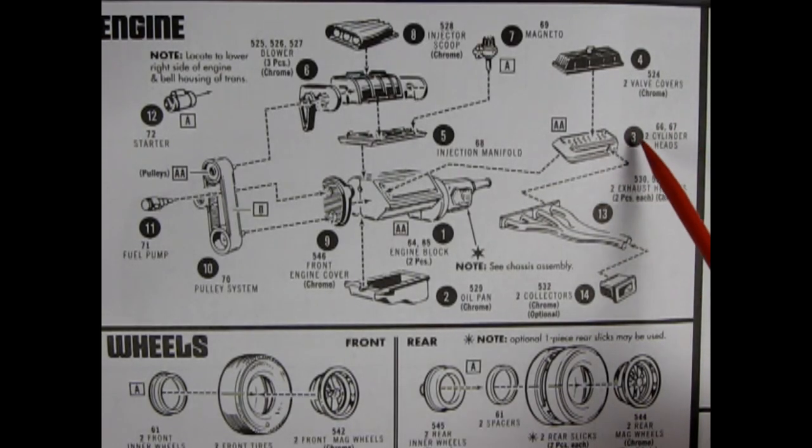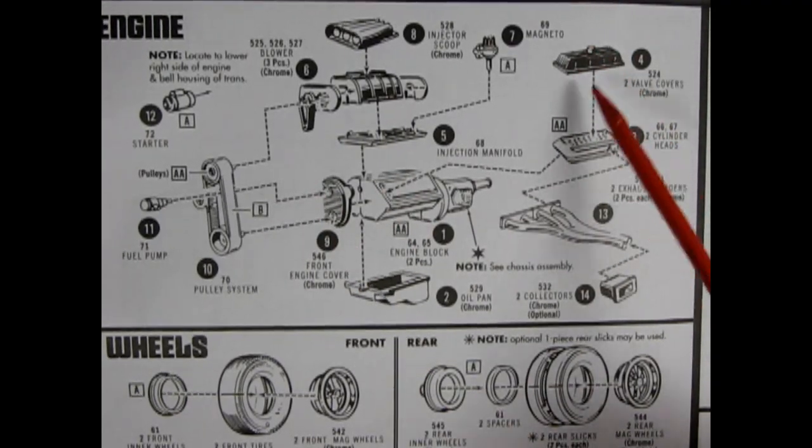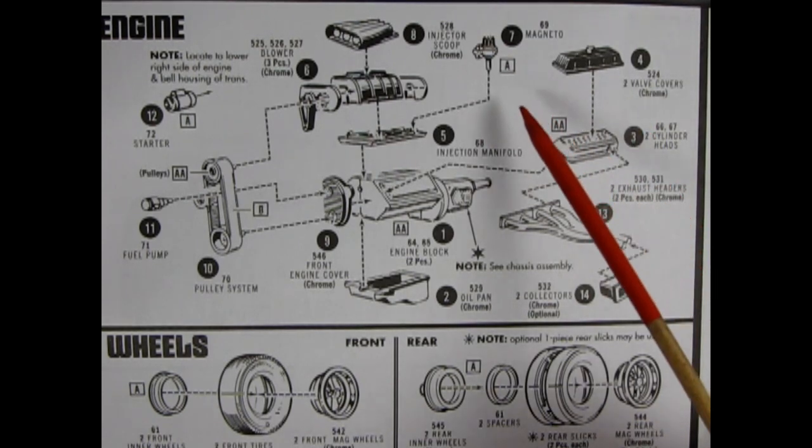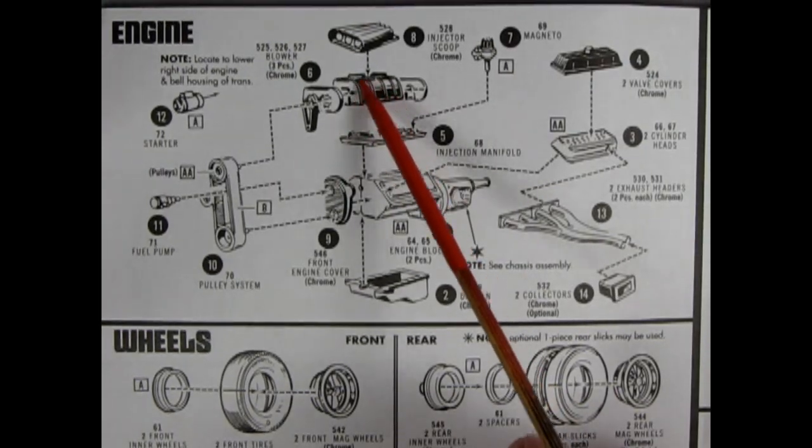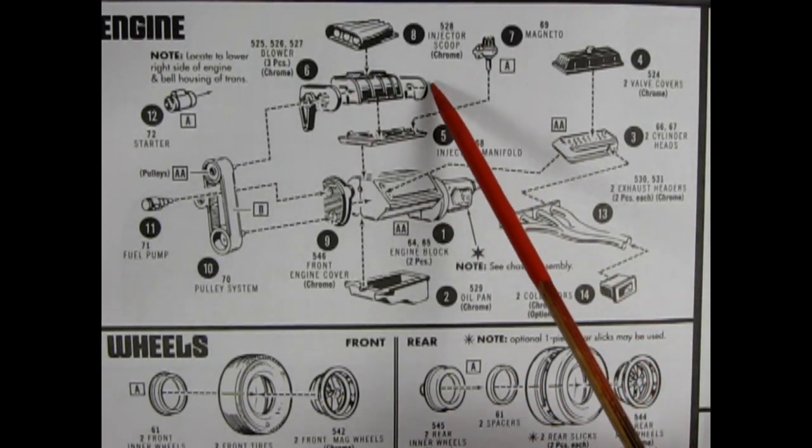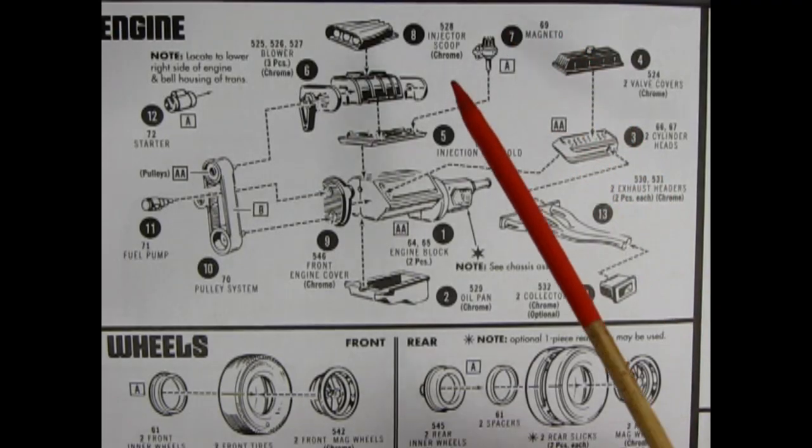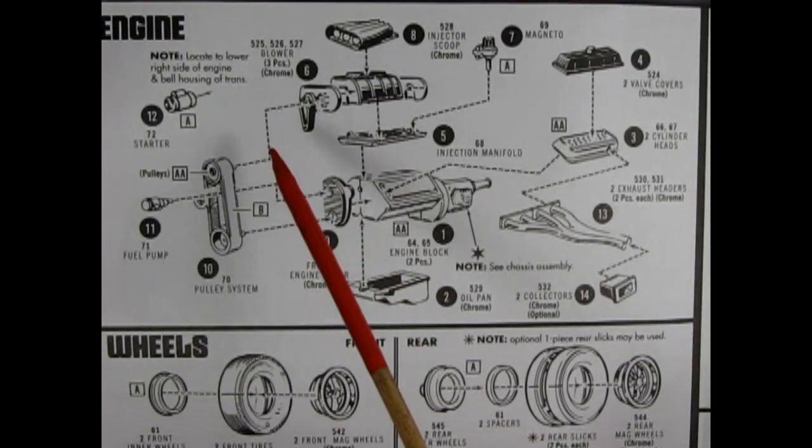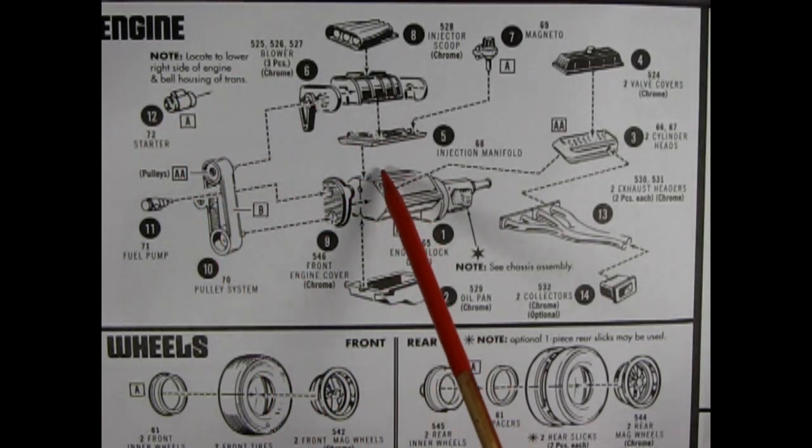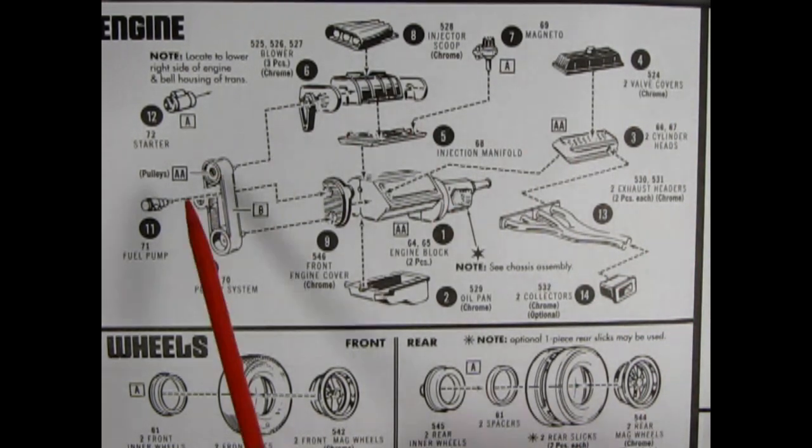So then we have our two cylinder heads, left and right hand side. They're not showing the opposite side here. Our two finned valve covers go down. And then we have the injection manifold, followed by the blower. Now this is just the center of the blower. And then I think our ends would glue on. Anyway, we've got our magneto, our injector scoop, our front engine cover, the pulley system, the fuel pump, and that goes into that hole there. And then our starter motor, which glues on the opposite side of the engine block about here somewhere. And then we have our headers, left and right hand side, and then the collectors on the bottom for 14 steps.